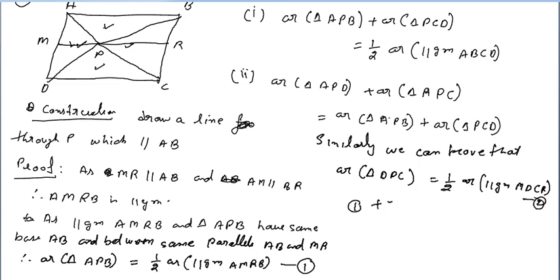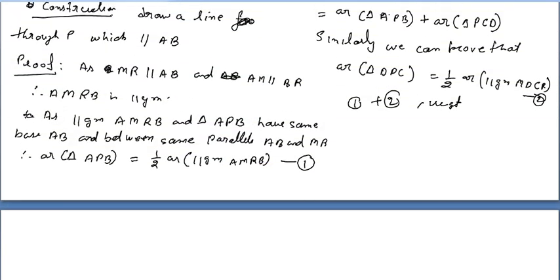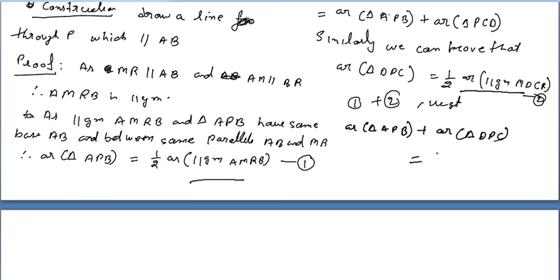Adding equations 1 and 2: area of triangle APB plus area of triangle DPC equals half of parallelogram AMRB plus half of parallelogram MDCR, which equals half the area of parallelogram ABCD. This is equation number 3, the first result proved.